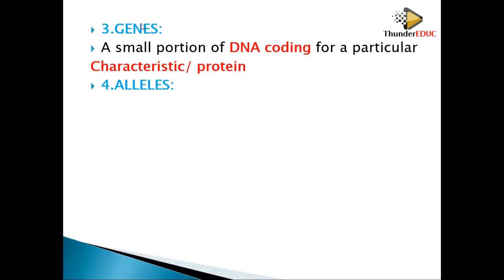Alleles are genes found on chromosomes. Chromatin network, chromosomes, genes, and alleles are all the same things but at different scales — like asking where you live: South Africa, then North West, then Rustenburg — you keep reducing the scale. Chromosomes, genes, alleles — same thing, different scales.